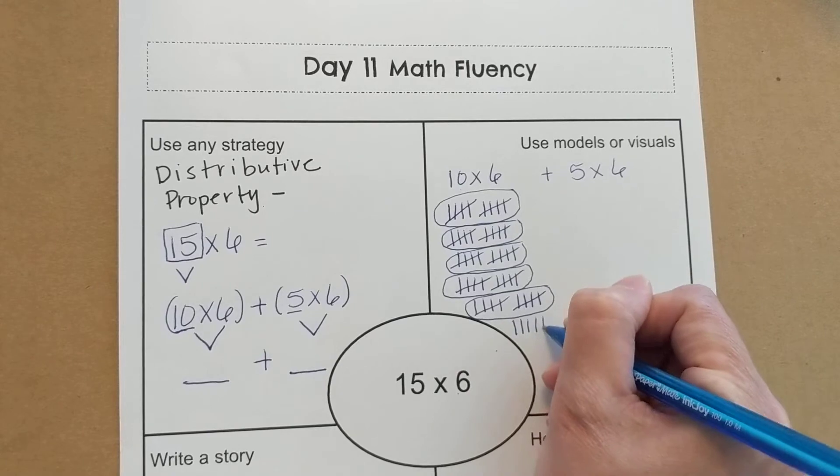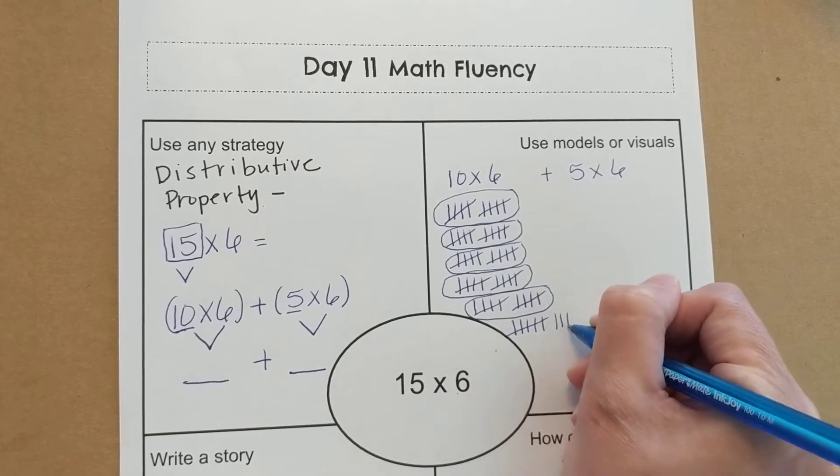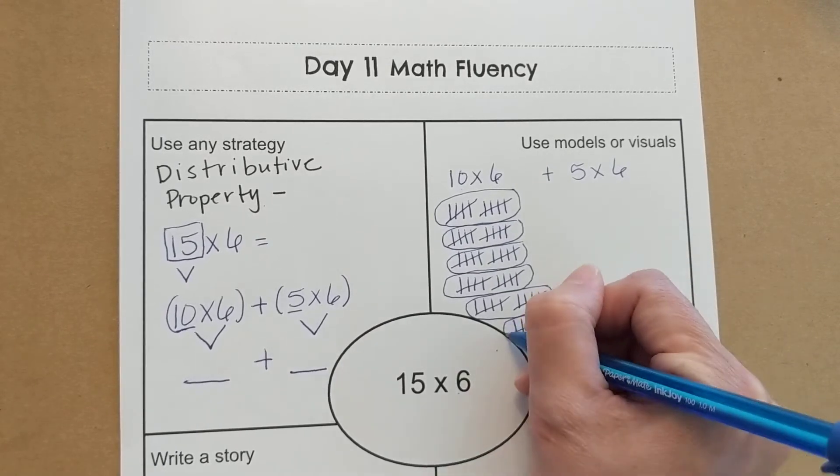And 1, 2, 3, 4, 5, 6, 7, 8, 9, 10. 6 groups of 10.